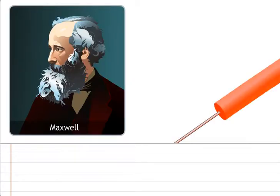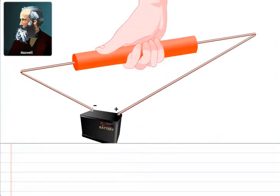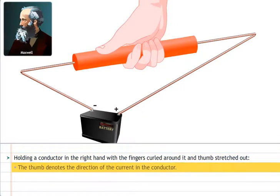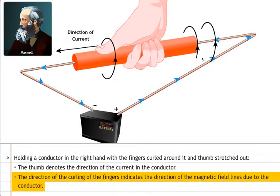You can determine the direction of magnetic field lines due to a current carrying conductor using Maxwell's right-hand grip rule. According to this rule, if you hold a conductor in your right hand with your fingers curled around it and your thumb stretched out, then your thumb denotes the direction of the current in the conductor and the direction of the curling of your fingers indicates the direction of the magnetic field lines due to the conductor.